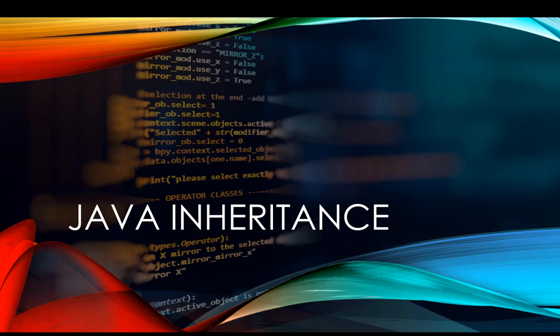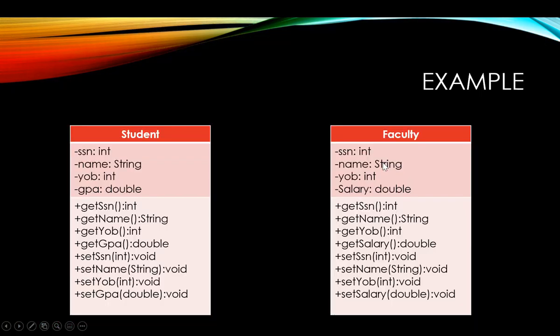In this video we will look at an important concept in object-oriented programming which is inheritance. To understand the concept of inheritance let's look at an example. In this example I'm creating a university system where I'm keeping track of people who are part of my university — specifically students and faculty.